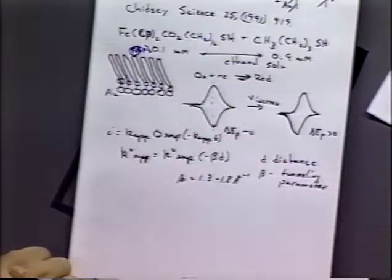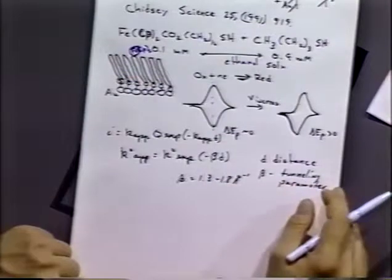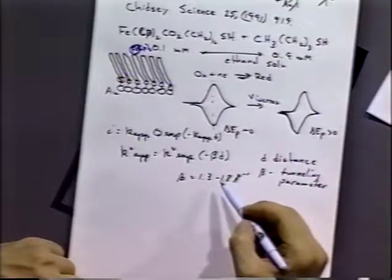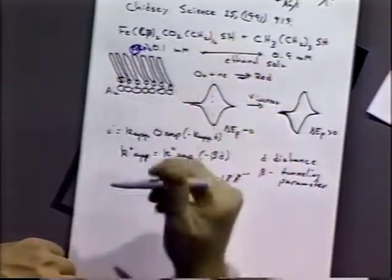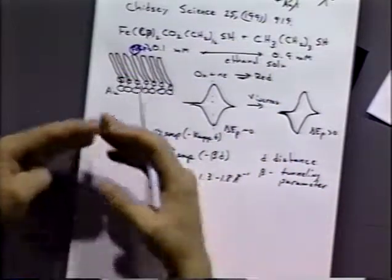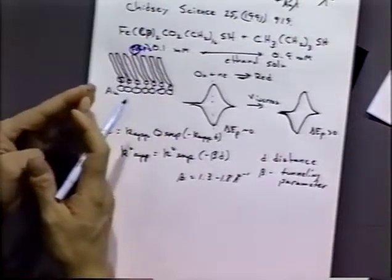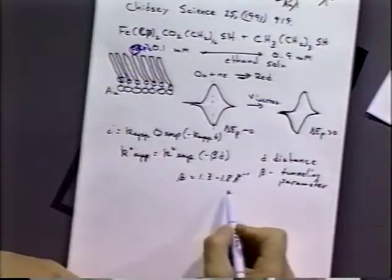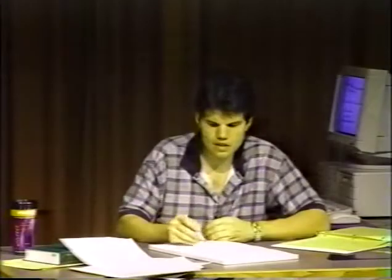And the true would be able to be extracted by considering that the apparent would be an exponential function times the true times the distance it has to tunnel. Exponential function of distance modified by a fudge factor, a tunneling parameter. And that tells you what the influence is of the intervening material on the tunneling process. So some materials would have a different beta factor. But it turns out for these alkane type chains, you see betas on the order of 1.3 to 1.8 reciprocal angstroms.